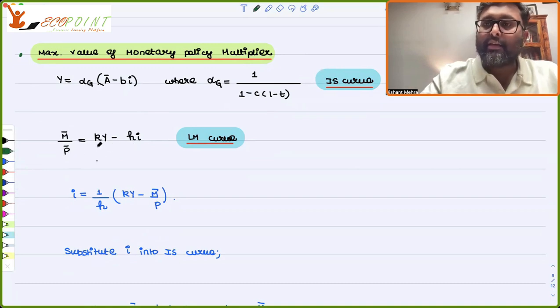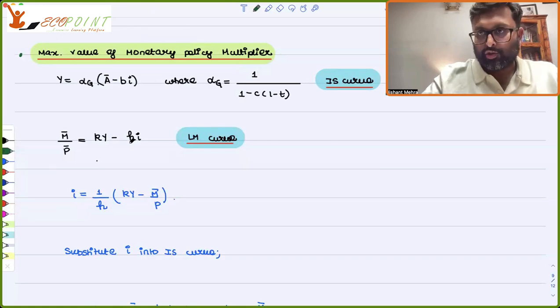K is the propensity of the money demand, which is going to change due to income, transactions demand for money. H is when the interest rate is going to change, how money demand is going to change. So this is negative, speculative demand for money.